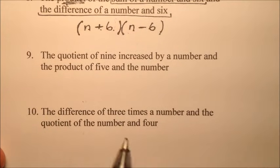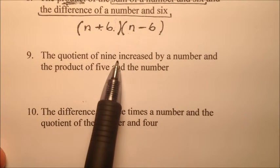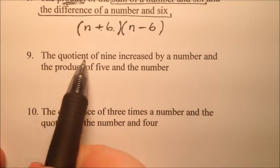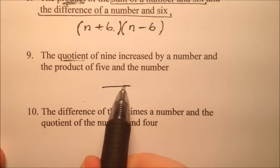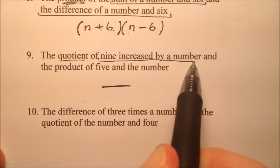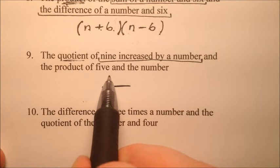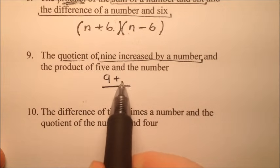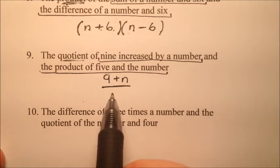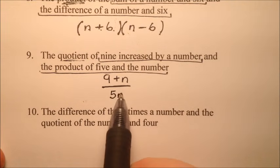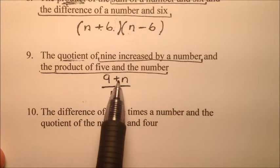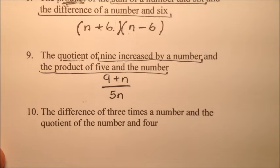Number nine says the quotient of nine increased by a number, and the product of five and the number. We've got a division bar because we're dividing two things. Nine increased by a number goes on top, so nine plus n. The product of five and the number goes on the bottom, so five times n. The answer is the quantity nine plus n divided by five n.